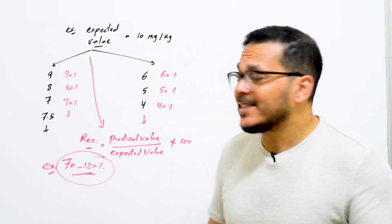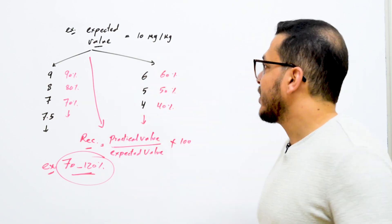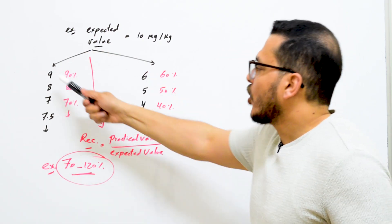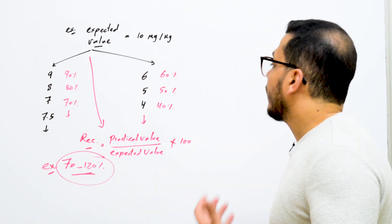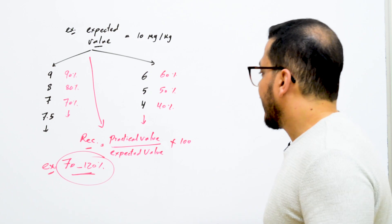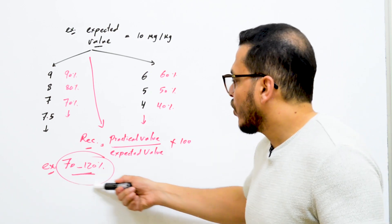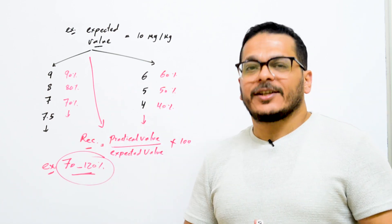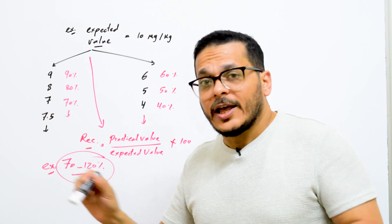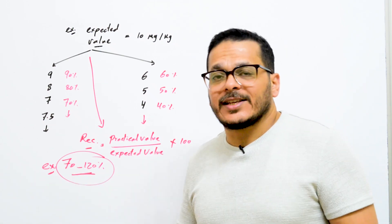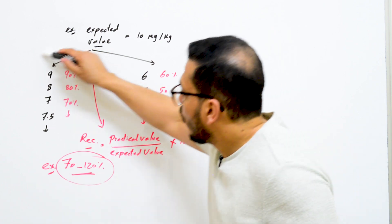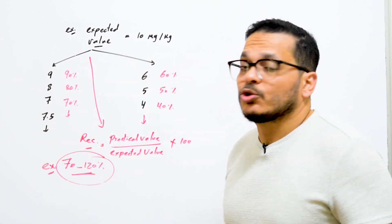For example, if the expected value is 10 µg/kg in the sample and you perform replicate spiked analyses, you might find results of 9, 8, 7, and 7.5 µg/kg. Recovery equals the practical value divided by the expected value multiplied by 100. If the guideline specifies a recovery range of 70% to 120%, this is your acceptable range. All of these results fall within this range — close together and to the true value — so these results are accurate.